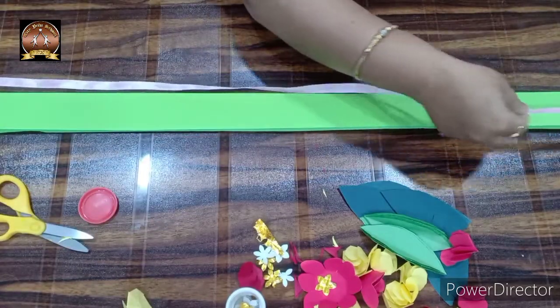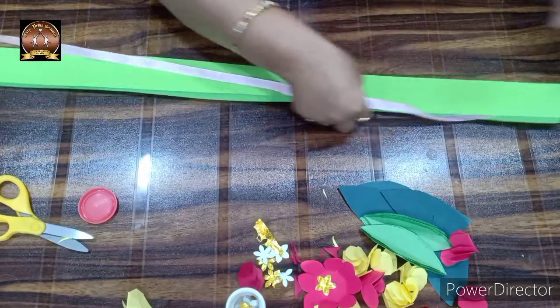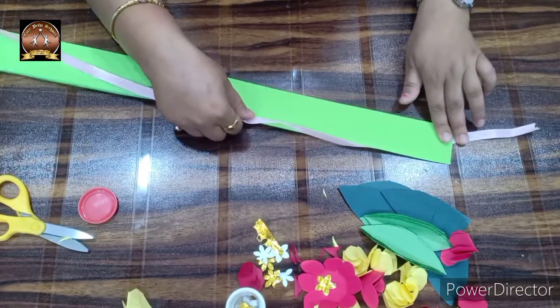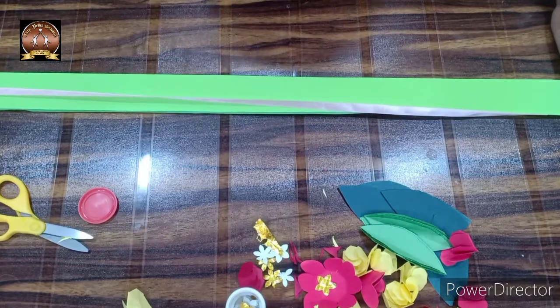Take a satin ribbon and check the measurement. Leave a little more ribbon from each end to hang it. Like this, stick the satin ribbon inside the fold.